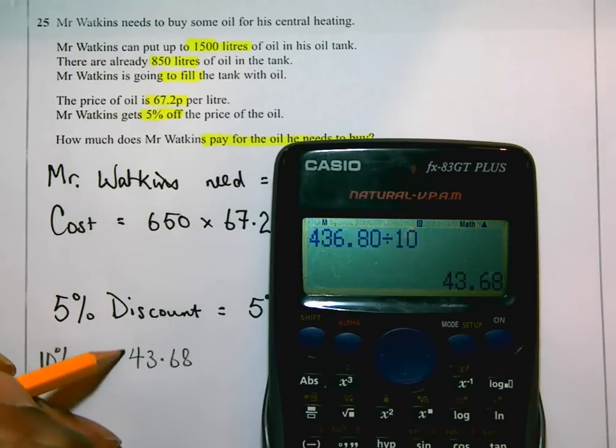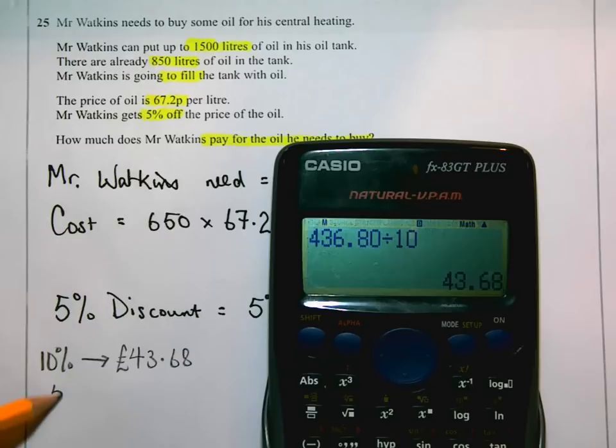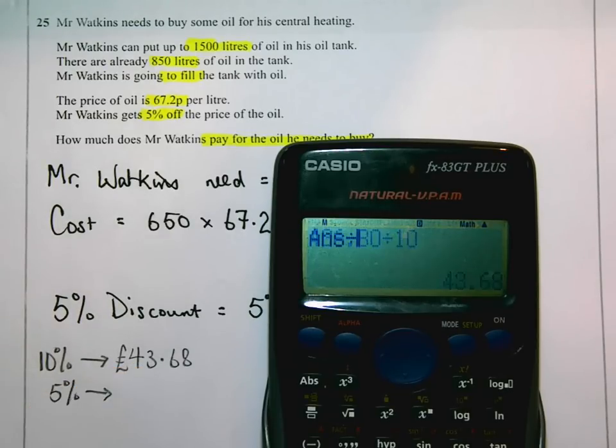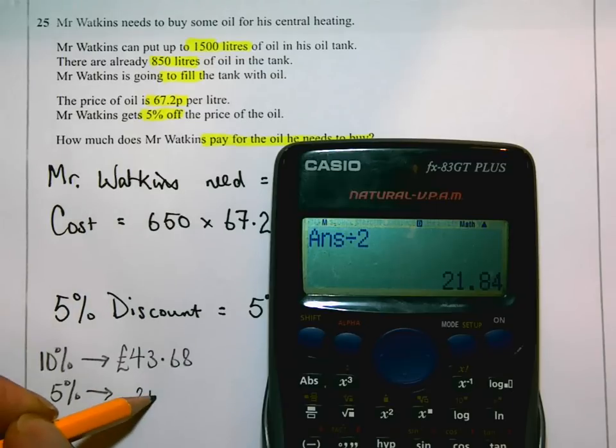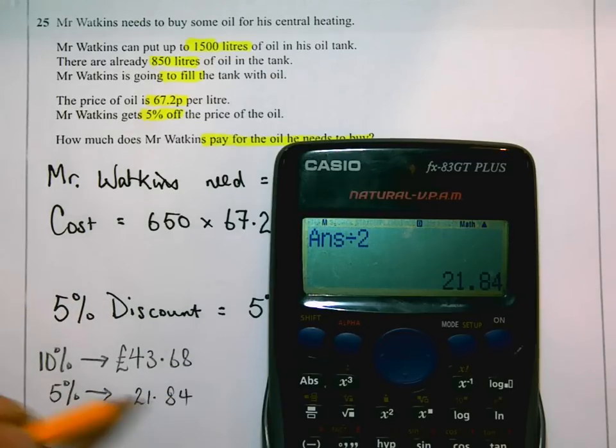10% is 43 pounds 68. So, that means 5% is going to be that divided by 2, half of that, which is 21 pounds 84.